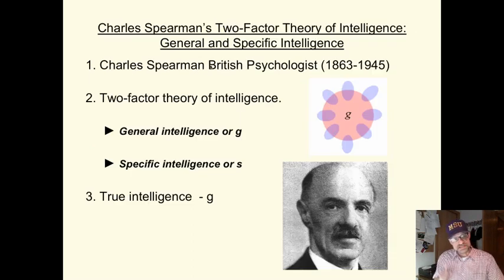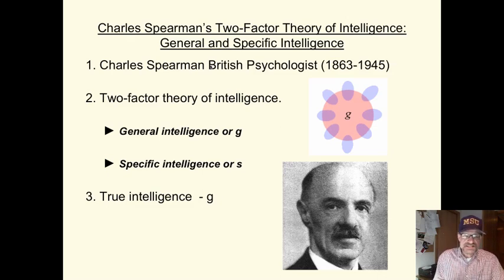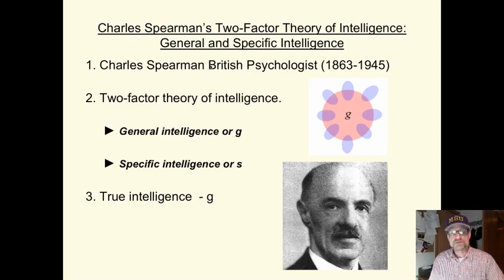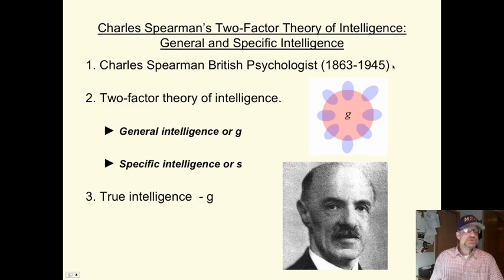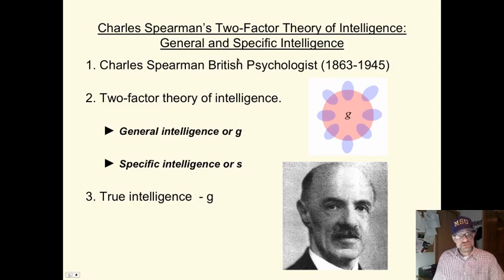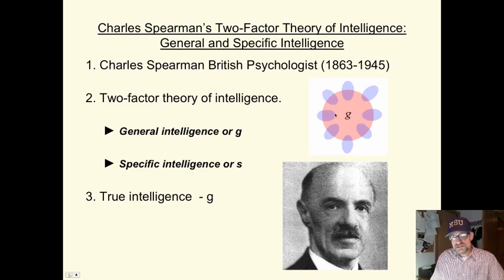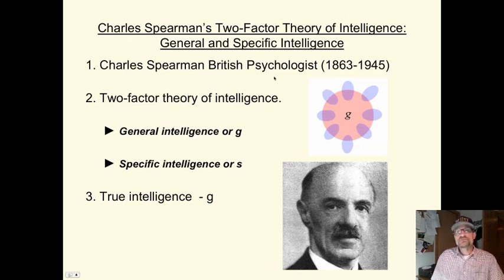Using that as a backdrop, let us look at Spearman's two-factor theory of intelligence. This is still a psychometric view, but it gives us a more expansive view of intelligence. The British psychologist postulated there are two aspects of intelligence. The first is general intelligence, which he calls G — our general cognitive functioning. Using a computer analogy, this would be the general processing power, memory, or storage of the computer. It involves how information is processed and the strength of neural pathways.